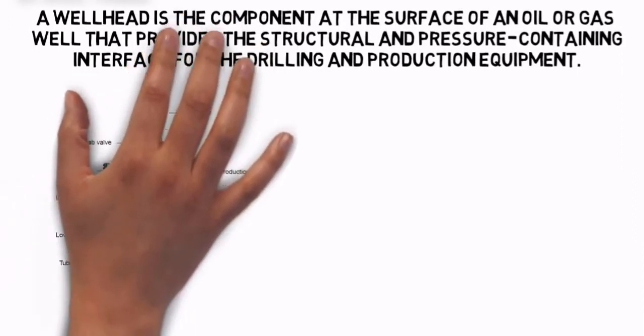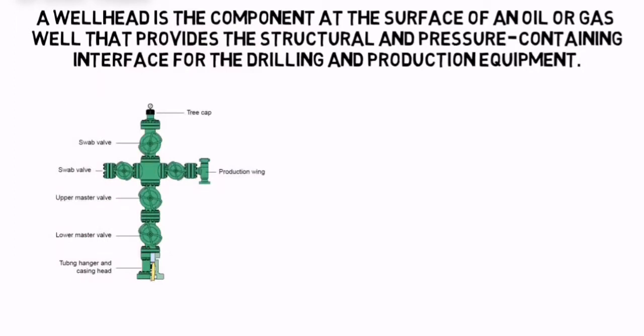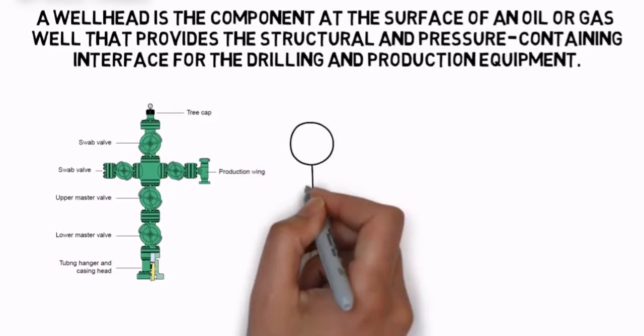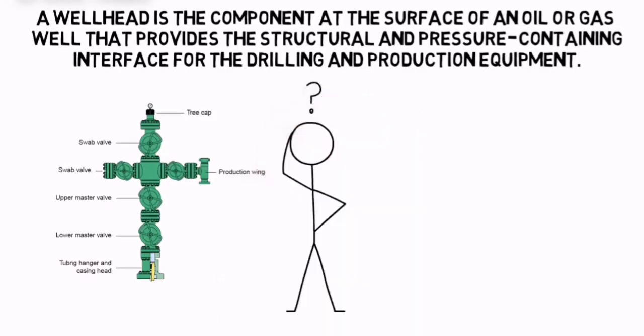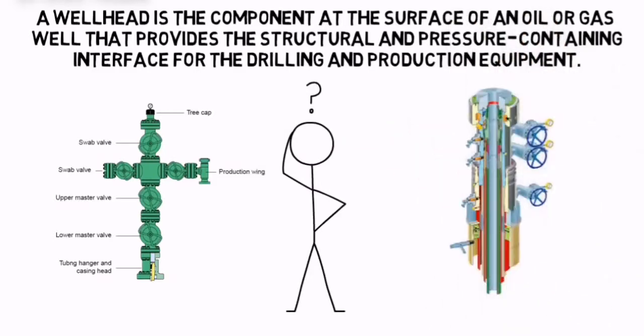Some people misunderstand the wellhead terms. We refer to the downside where the tubing is hung as the wellhead, which also provides the connection point between tubing and Christmas tree. The upper part is the Christmas tree.